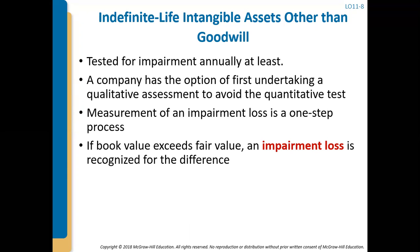Goodwill has an indefinite life. It's an intangible asset with an indefinite life, so we do not amortize goodwill. However, we do test it for impairment annually and also any other time that you think a circumstance has taken place that could have caused impairment to that intangible asset.